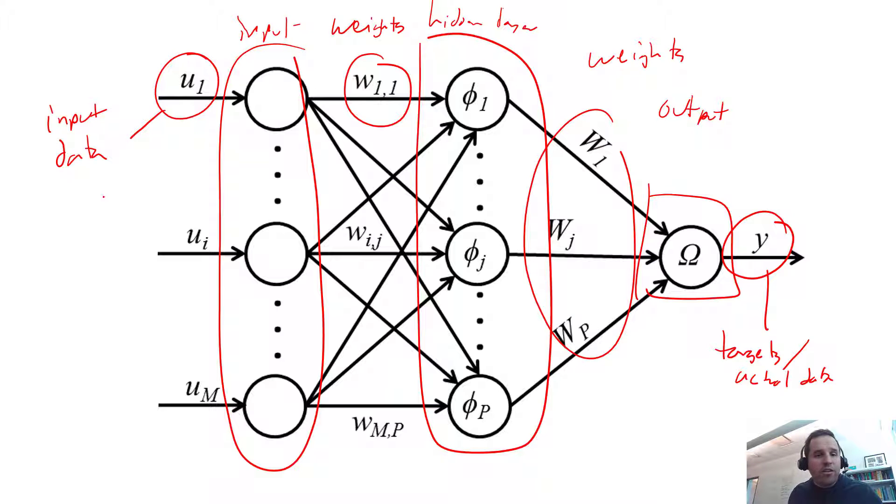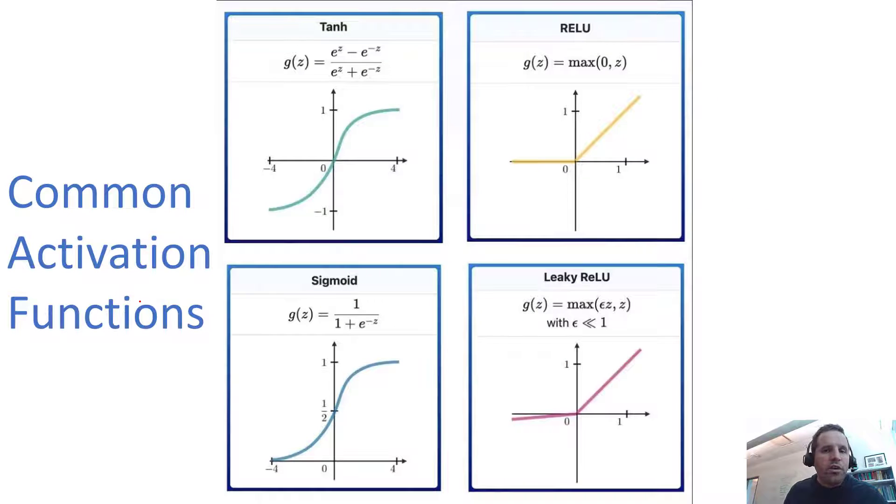We've sort of looked at the structure of a neural network. So let's try and translate this into math. But first we're going to look at these different options of activation functions. So when you're building a neural network, you can customize the types of activation functions that you want. So these are some common activation functions. These aren't all of the activation functions. But common one is the hyperbolic tangent function. So this would be the input data coming into that neuron, into that activation function. And then this gives us the output.